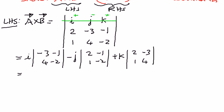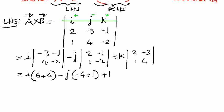When we expand this, i times: negative 3 times negative 2 is positive 6, minus 4 times negative 1, with a negative sign will be positive 4. Minus j times: 2 times negative 2 is negative 4, 1 times negative 1 is negative 1, but with a negative sign that is positive 1. Plus k times: 2 times 4 is 8, minus 1 times negative 3, times negative will be positive 3. So when we simplify: 6 plus 4 is 10i, negative 4 plus 1 is negative 3, negative times negative is positive so this is 3j, and 8 plus 3 is 11k.